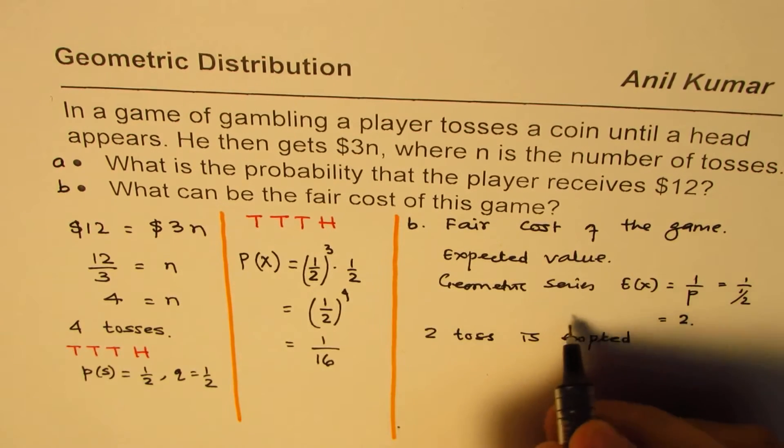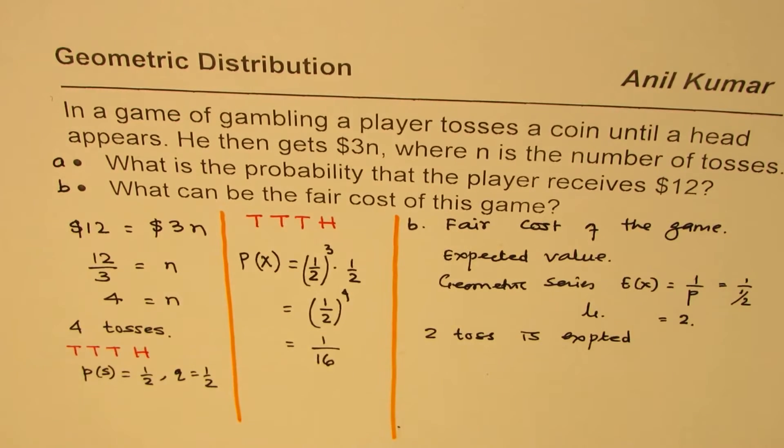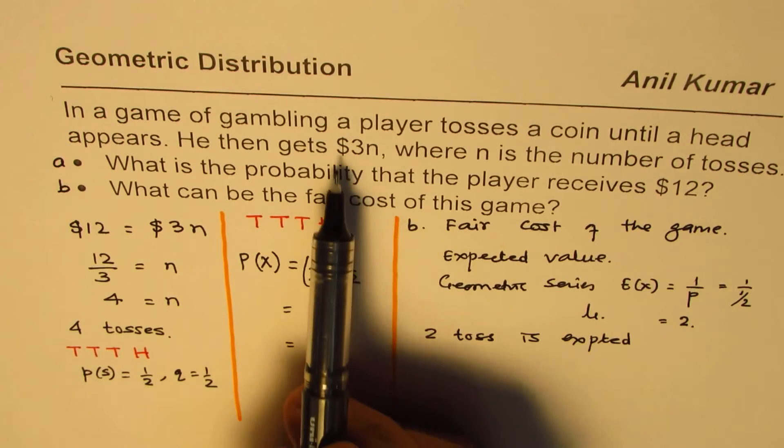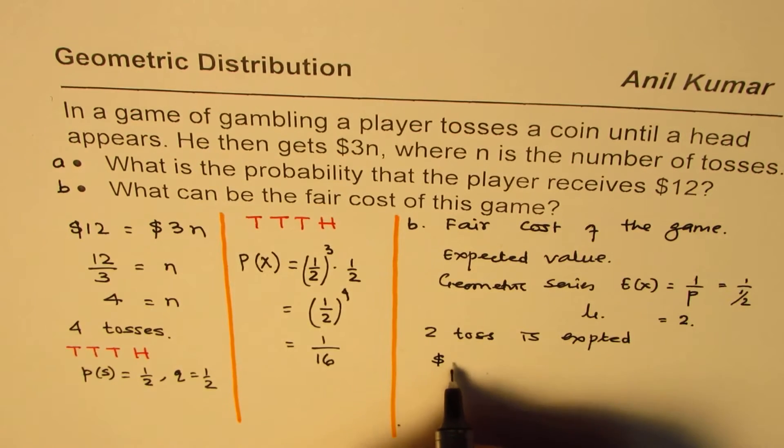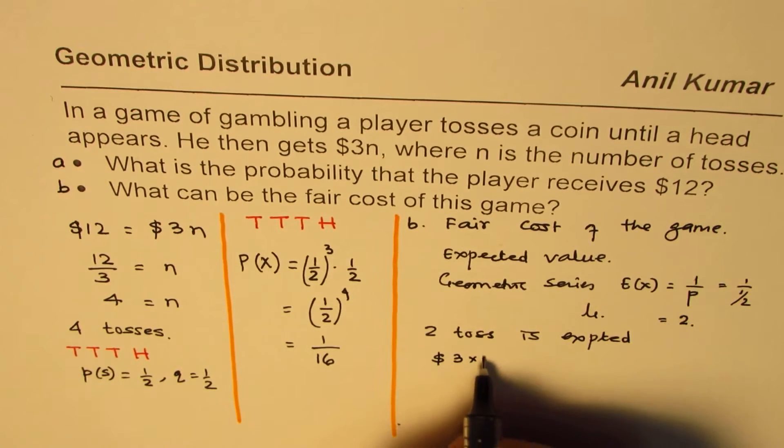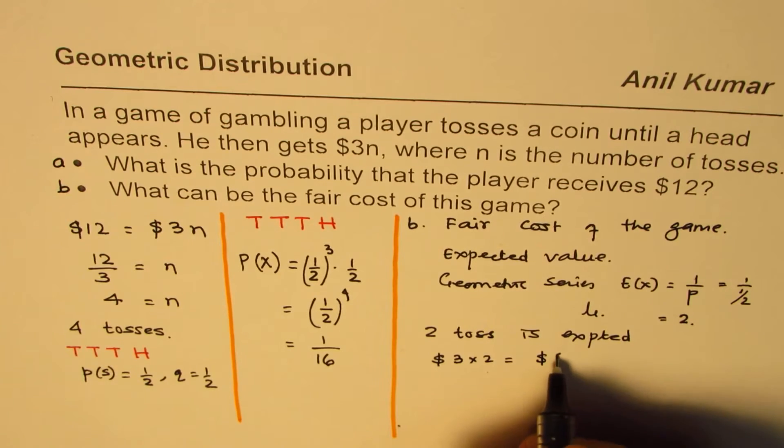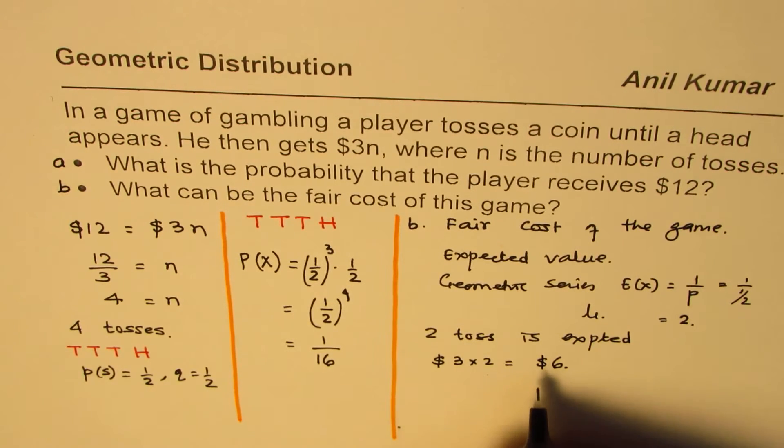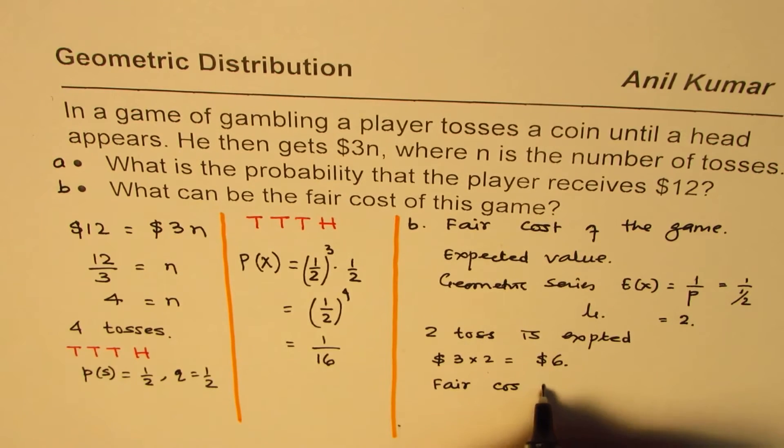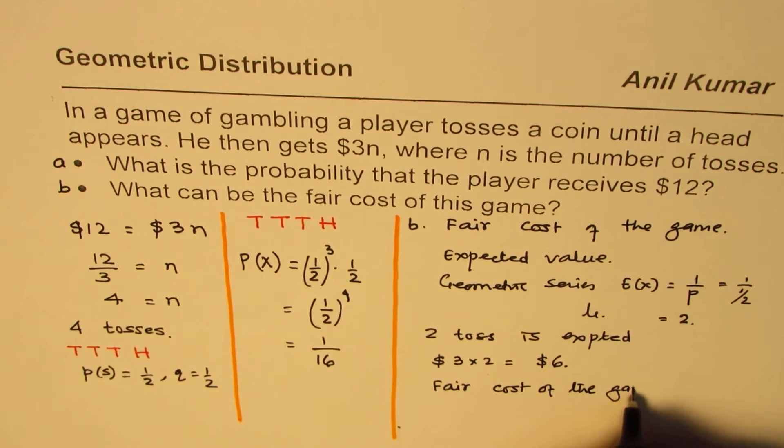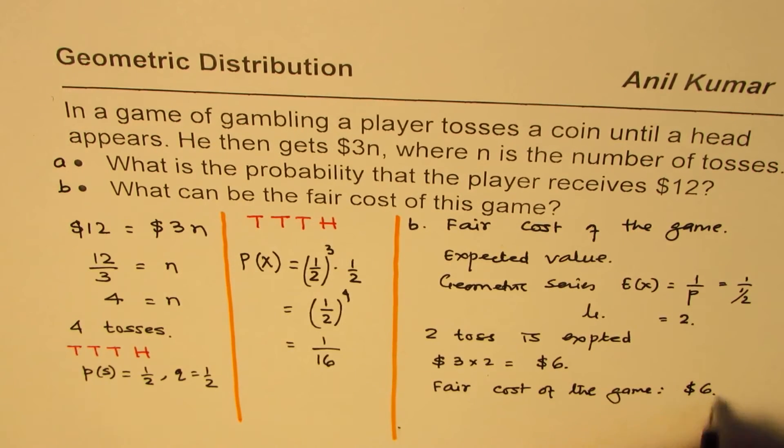This is also the mean, mu is 2. Since you get $3 times n, in dollars this becomes 3 times 2, which is $6. So in this game, the fair cost is $6. The fair cost of the game should be $6.